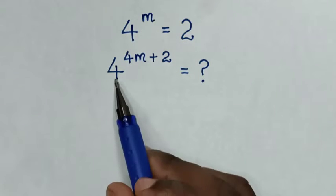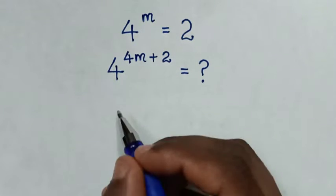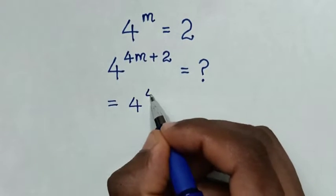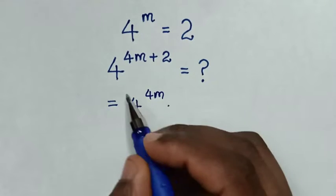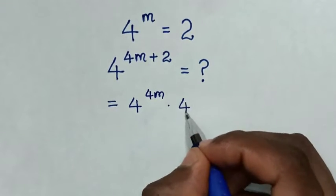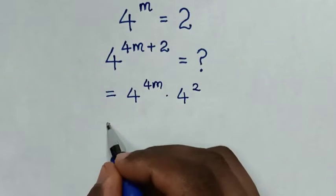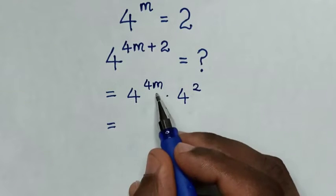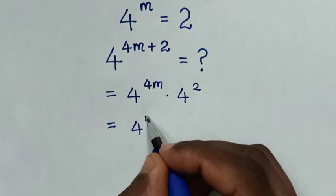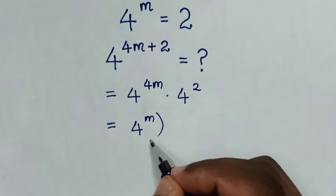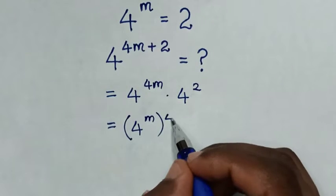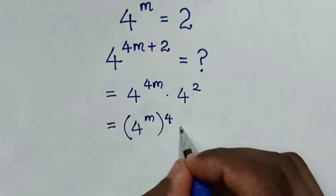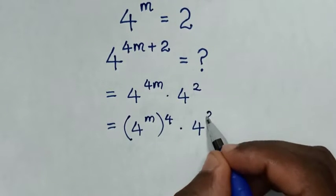From here, 4 power of 4m plus 2 is equal to 4 power of 4m, times 4 power of 2. We take this power of m inside the bracket, so it will be 4 power of m, then bracket power of 4 outside the bracket because m times 4 is 4m, then times 4 power of 2.